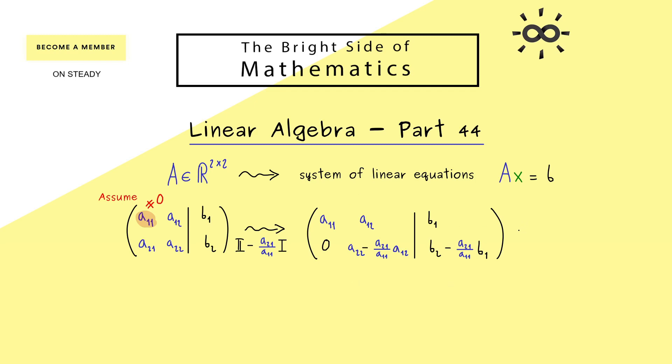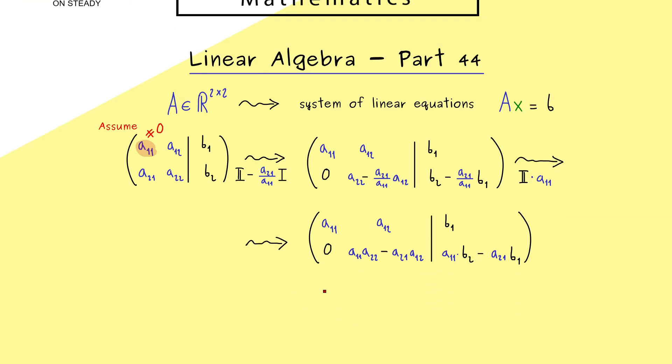However, for our general end result here I don't like the fractions we have. Therefore I will multiply our new second row here by the factor a₁₁. Since this is a non-zero element, the whole thing is an allowed row operation. And then what we get is something that is much nicer to read: a₁₁ times a₂₂ minus a₂₁ times a₁₂. Moreover, we get a similar thing on the right-hand side. However, we are not so interested in the right-hand side after all. The important thing is now our row echelon form on the left-hand side.